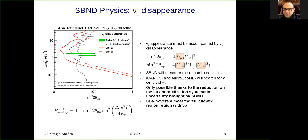In addition to neutrino appearance, we can study neutrino mu disappearance. And actually, if you have neutrino e appearance, then you have to also have neutrino mu disappearance because one of the matrix elements that is driving neutrino e appearance is U mu 4, which is the matrix element which is responsible of neutrino mu disappearance. The role of SBND here is measuring the unoscillated neutrino flux. And ICARUS and MicroBooNE will search for a deficit of mu neutrinos, which is only possible thanks to the reduction on the flux normalization systematic uncertainty brought by SBND. As you can see here in the plot, SBND will cover almost with five sigma the large region shown in green.